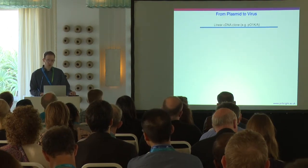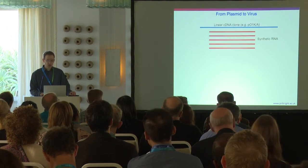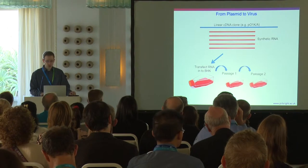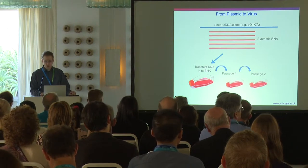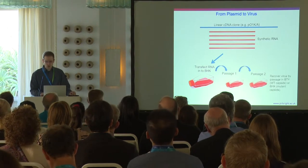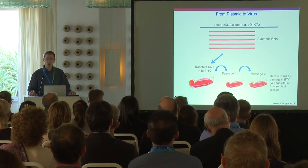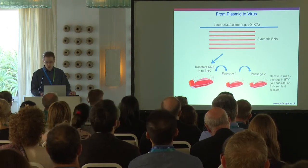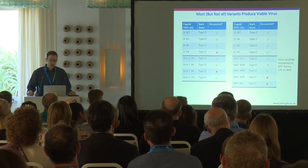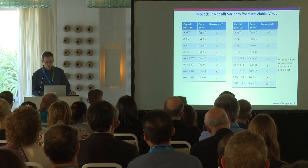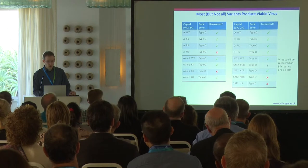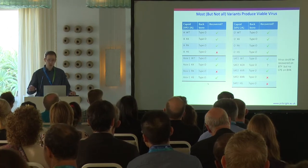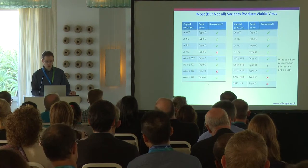Once you have all these plasmids, they're linearized, synthetic RNA is made, transfected into BHK cells, and then the supernatant was passaged to recover the viruses. We recovered the wild-type capsids on primary bovine thyroid cells and the mutant capsids on BHK cells. This table shows a list of all the plasmids we made and whether they could be recovered or not with a tick or a cross. Basically, we could recover most but not all the variants.